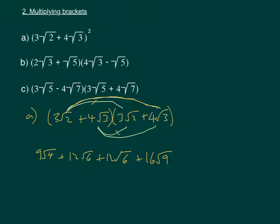So 9 root 4 is 9 times 2, which is 18. 12 root 6 plus 12 root 6 is going to give us 24 root 6. And 16 times root 9 is the same as 16 times 3, which is 48. And then if we collect these two like terms, these two constant terms, we're going to get 24 root 6 plus 66.